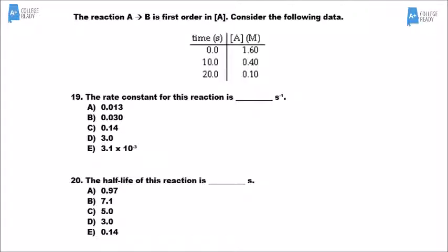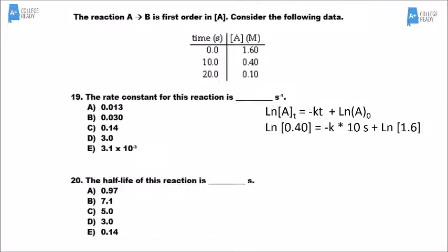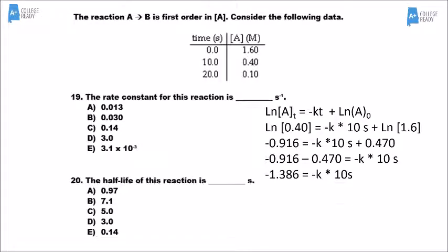For problems 19 and 20, we use the data table at the top. We know it's first order with respect to A, so I use the first-order integrated rate law. Plugging in values from the data table at 10 seconds — the concentration at that point and the initial concentration of 1.6 — and solving for K, I get 0.1386, which is close enough to 0.14.